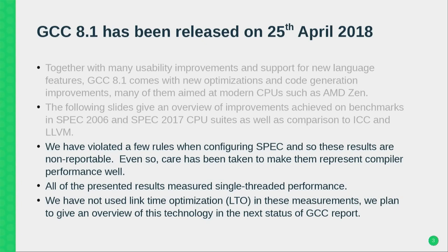All the performance numbers you'll be seeing are single-threaded performance — we haven't looked at running things in parallel too much yet. All these numbers are the standard normal compilation that's been used for decades; we do not use link-time optimization. One reason we do not have LTO numbers in this talk is that I have a talk on LTO on Wednesday, and another reason is that it makes comparison slightly awkward sometimes, which we'll get to later.